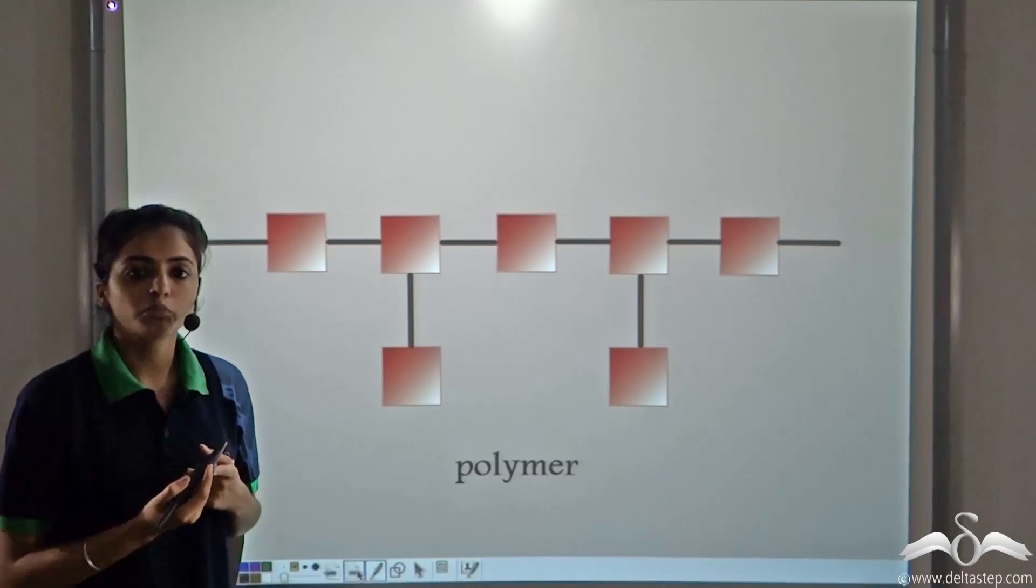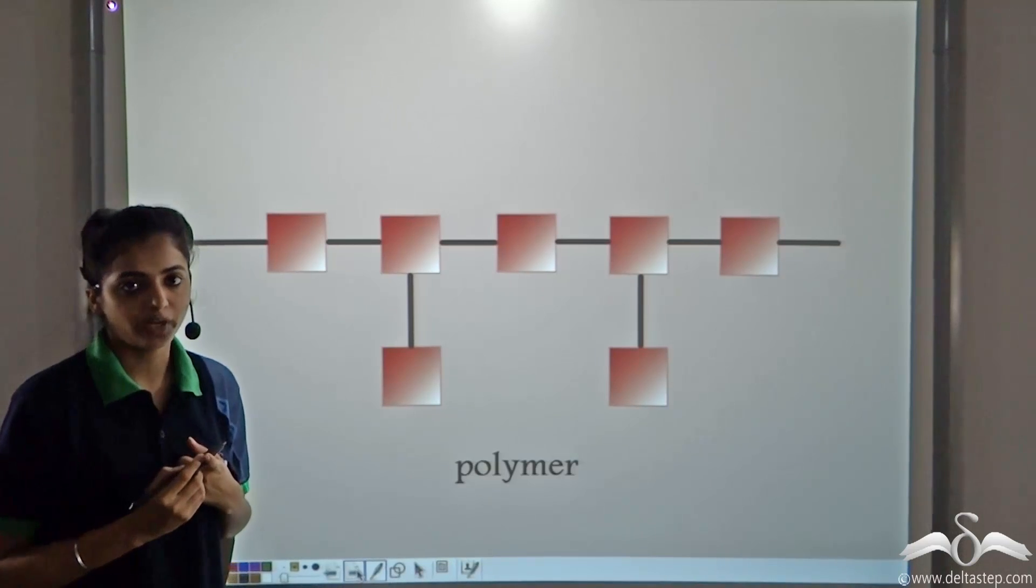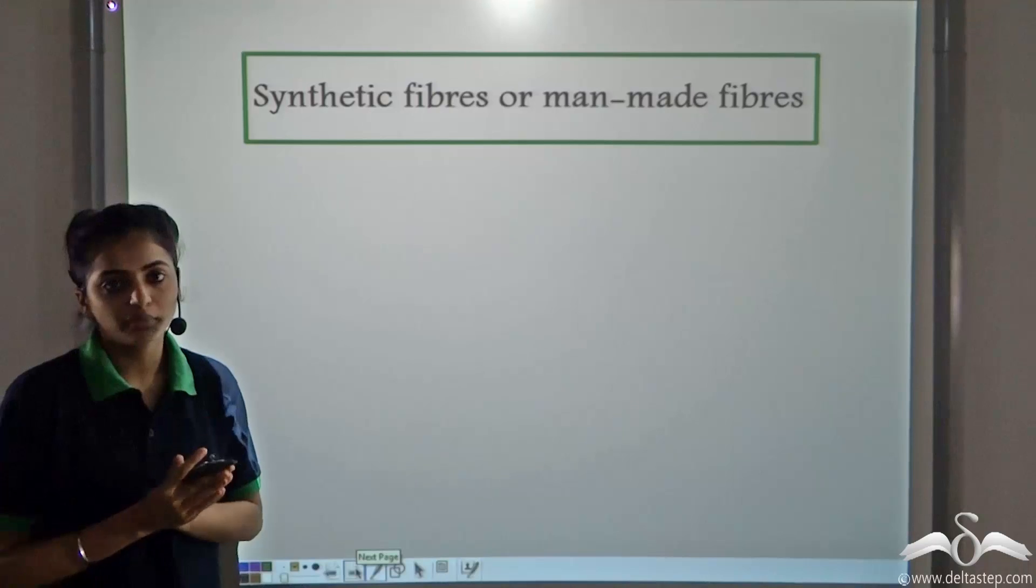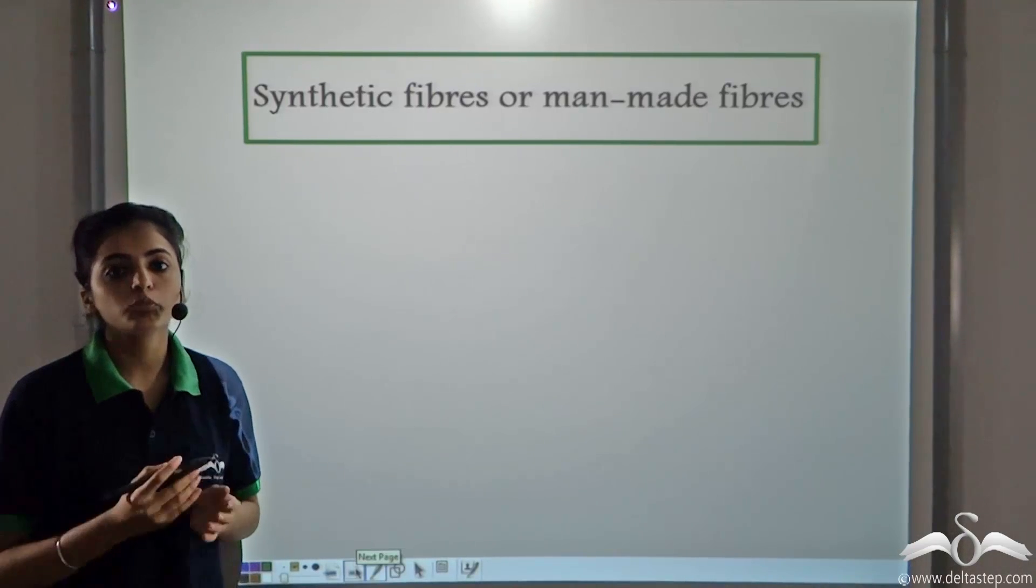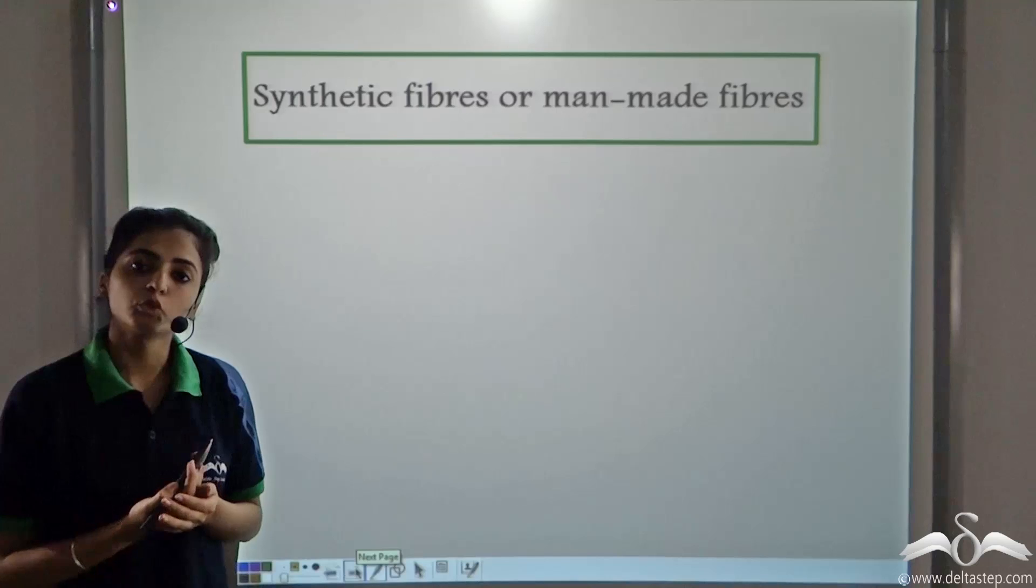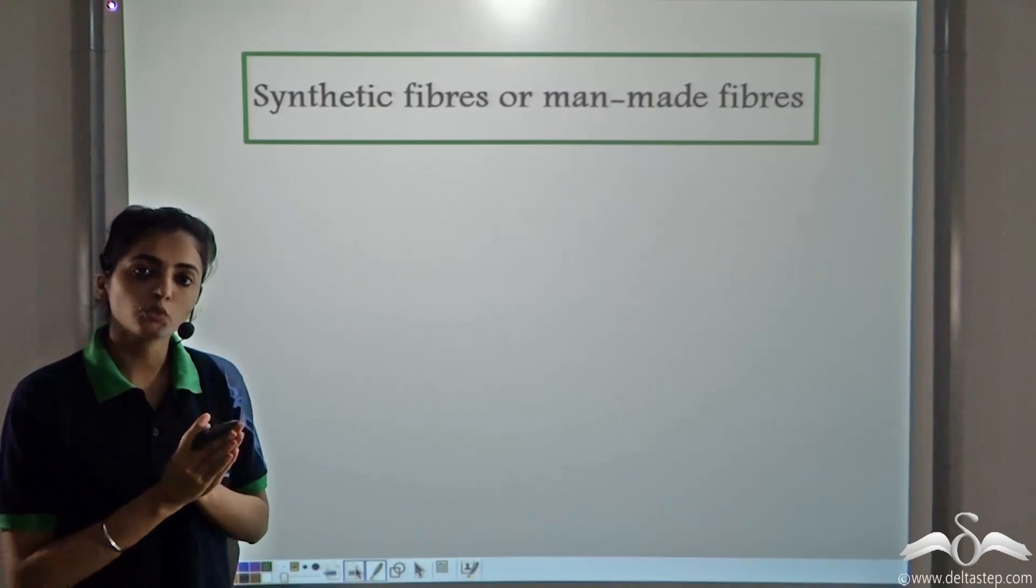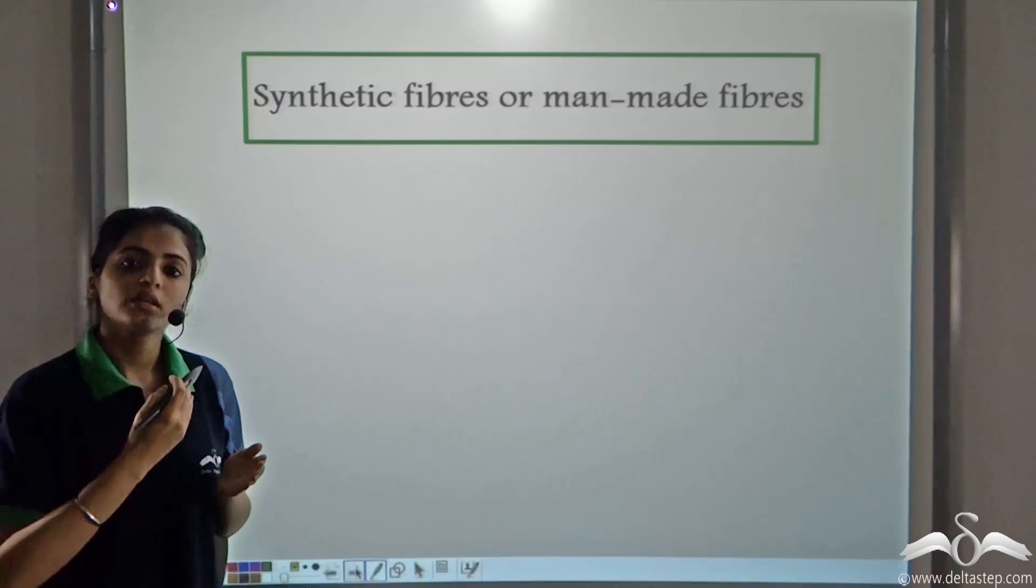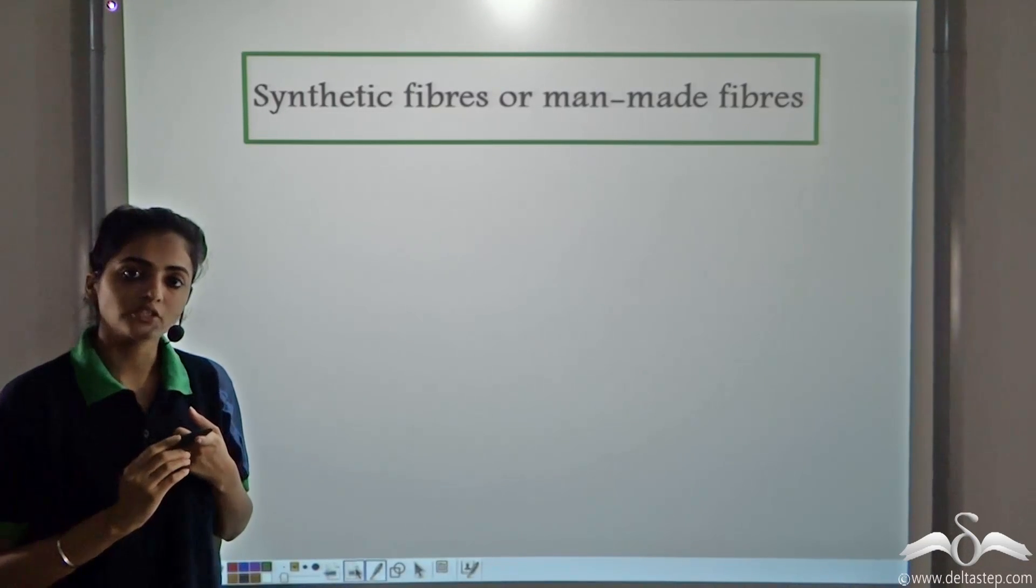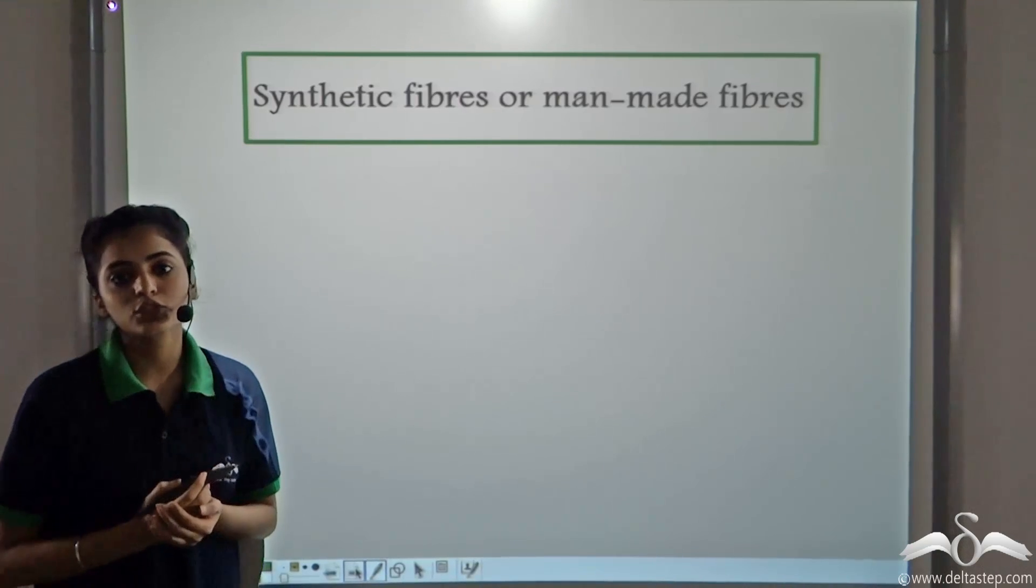And these are the polymers which are used in making the artificial or the synthetic fibers. So how do we get these artificial, synthetic, or the man-made fibers? They are made up of polymers. And polymers are long chains of monomers. Monomer is the repeating unit. When this monomer repeats, and it forms a long chain, whether a straight chain or a branched chain, we get a polymer. And these polymers are used for making synthetic or man-made fibers.